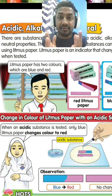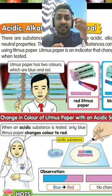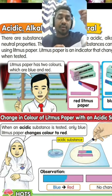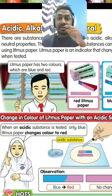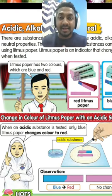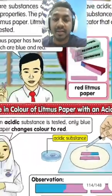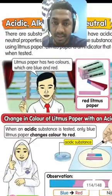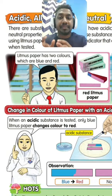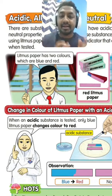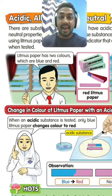For example, let's say orange juice. If you put the blue litmus paper into the orange juice, it will turn red — the blue color will turn into red. So if the blue litmus paper changes to red, it means the substance is acidic.